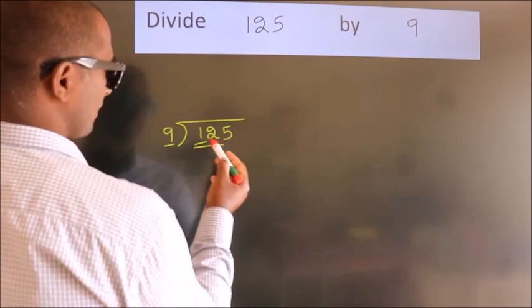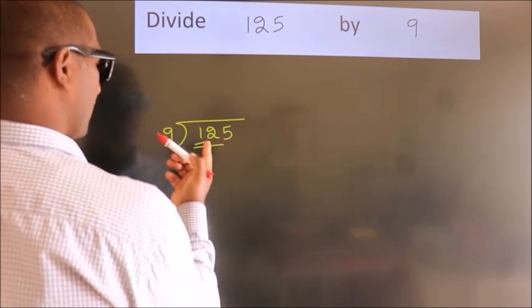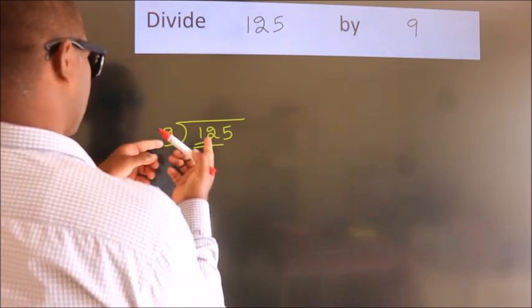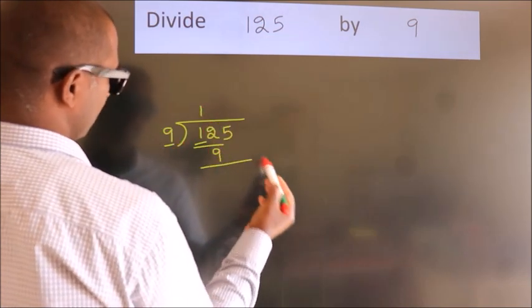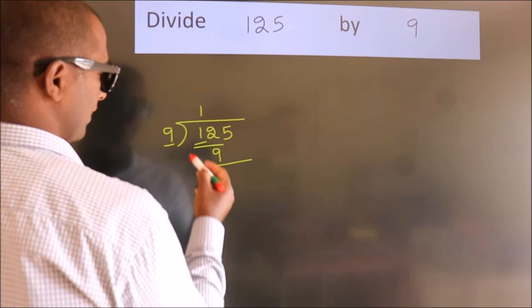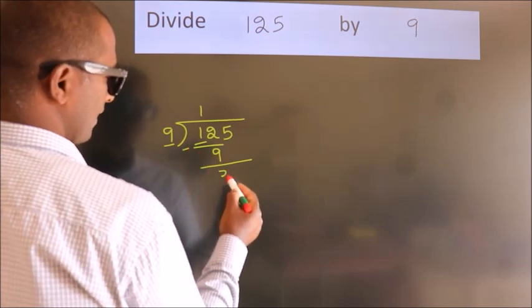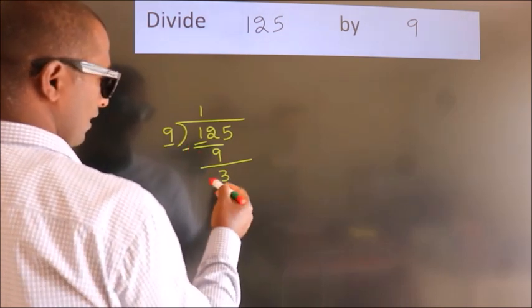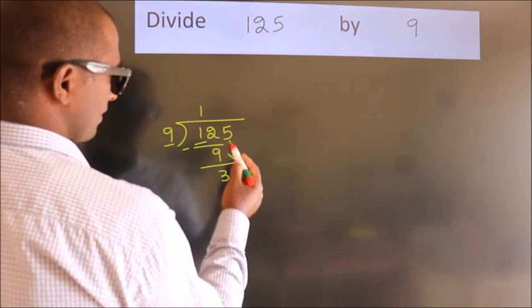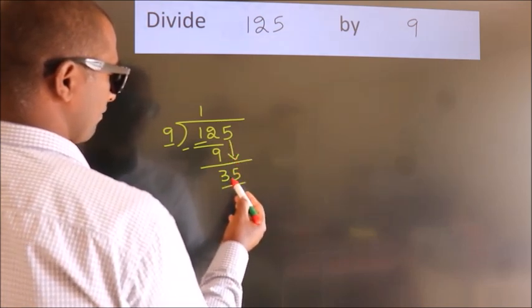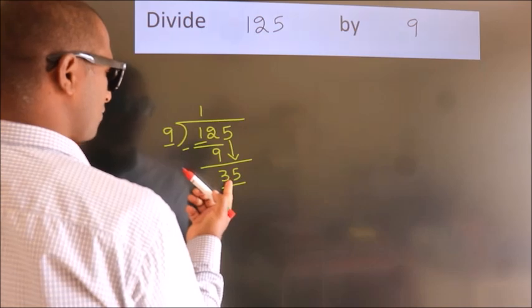12. A number close to 12 in the 9 table is 9 once 9. Now we should subtract. We get 3. After this, bring down the beside number, so 5 down. So 35. A number close to 35 in the 9 table is...